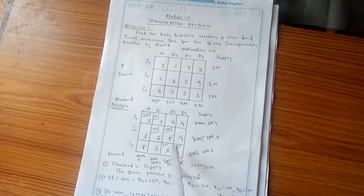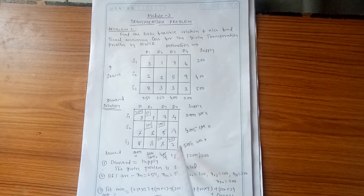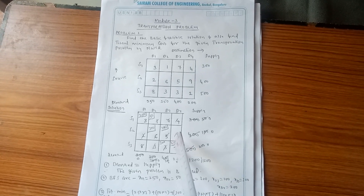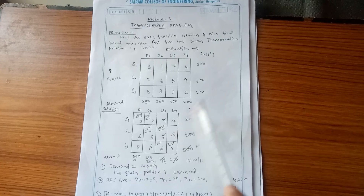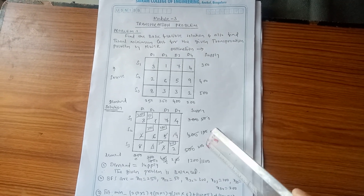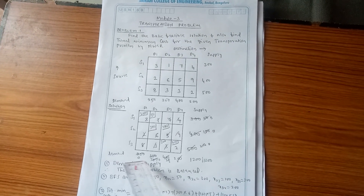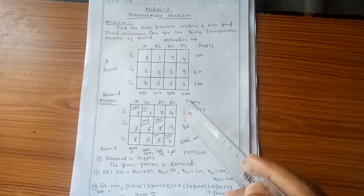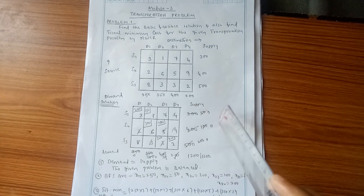The last column has cost 2. Supply remaining is 200 and demand for D4 is also 200. Allocate 200. All supply and demand values become 0. All values have been allocated to their respective columns and rows.